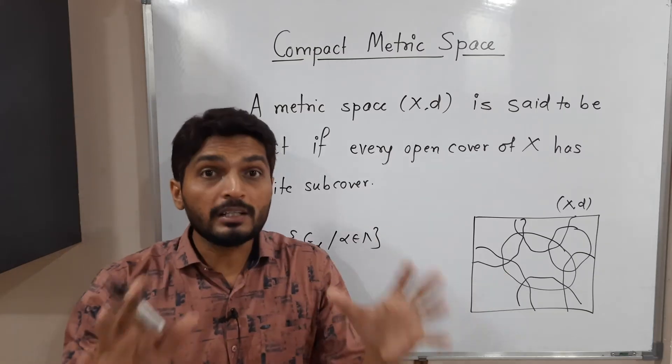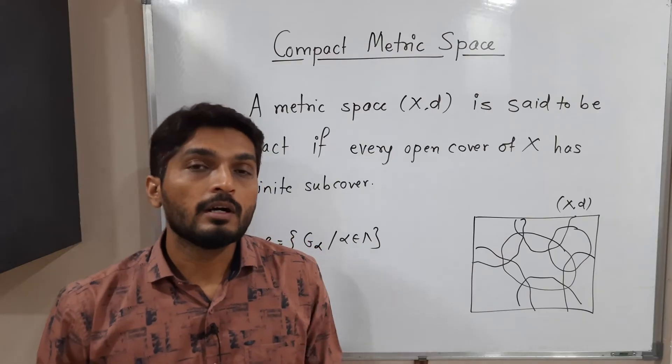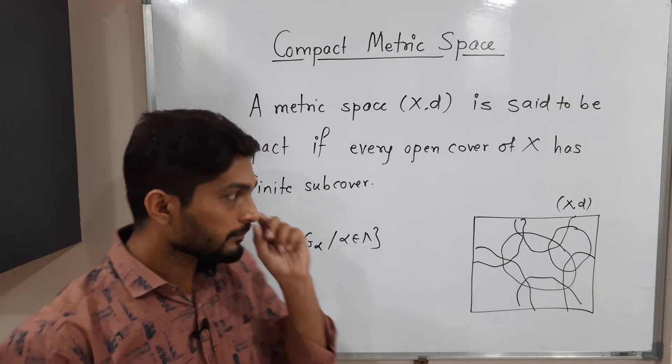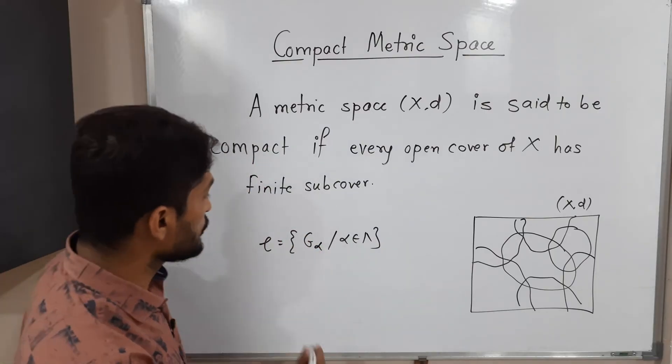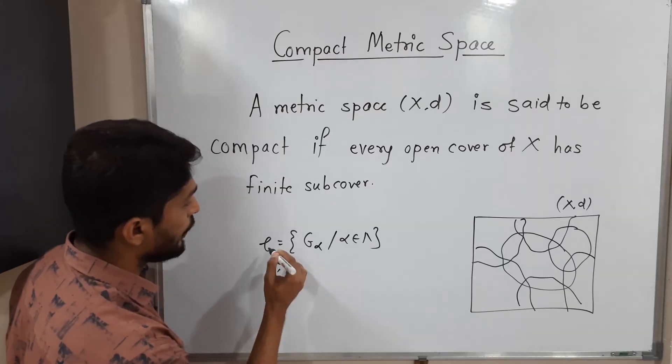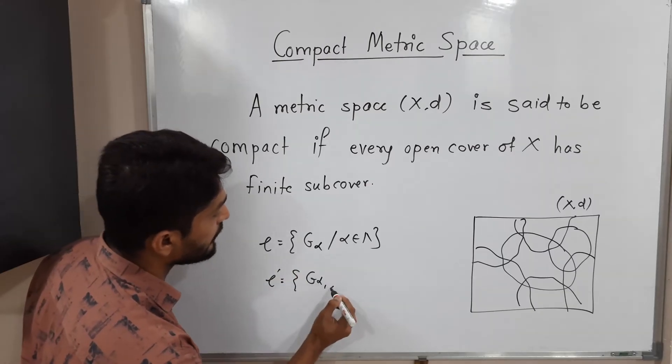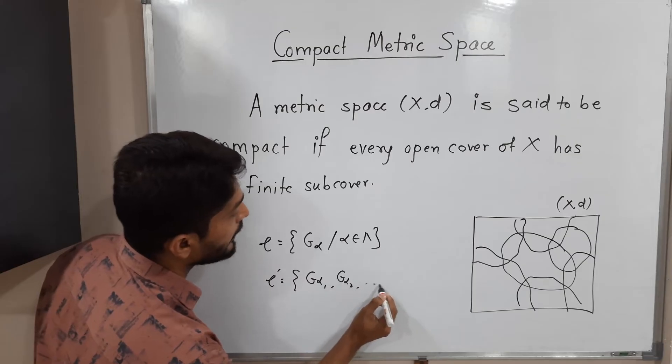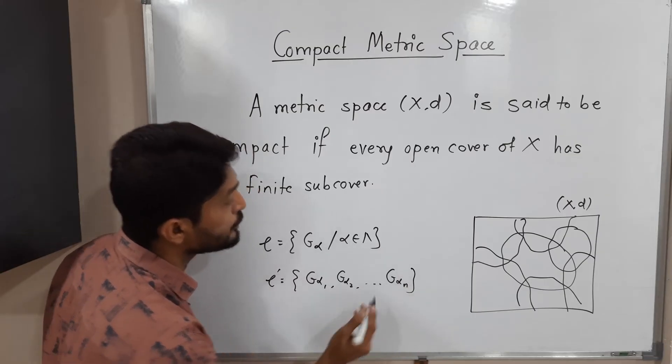So if you have any such open cover, it should have a finite subcover. That means you should have a subcover C' of C such that G_alpha1, G_alpha2, and so on, G_alphan. It should be finite.